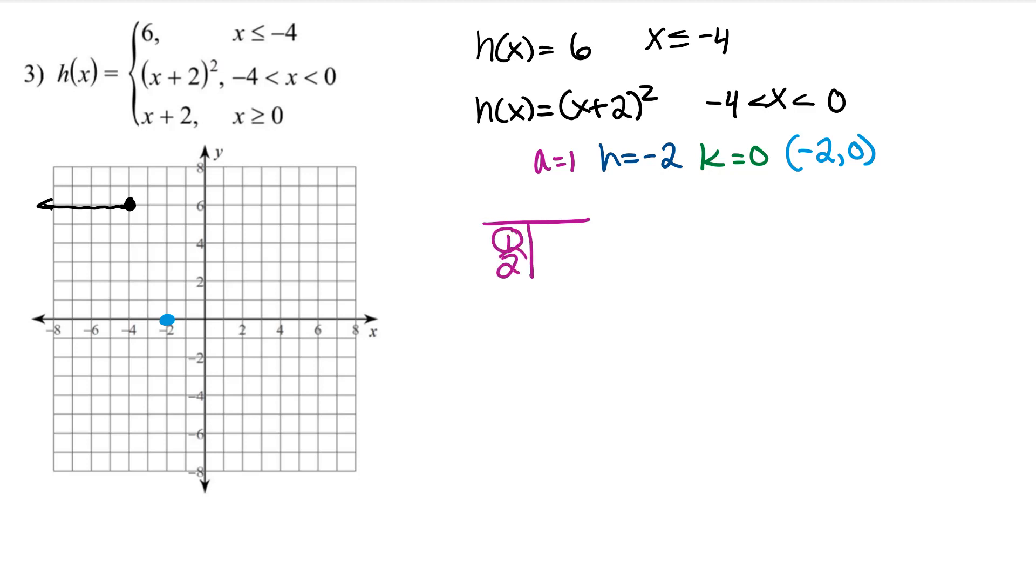Go ahead and graph the parabola using the rise. This parabola, however, is only defined between negative 4 and 0, and not at negative 4 or at 0. So at negative 4 and at 0, we should have a hole. Everything outside of that interval should be erased.